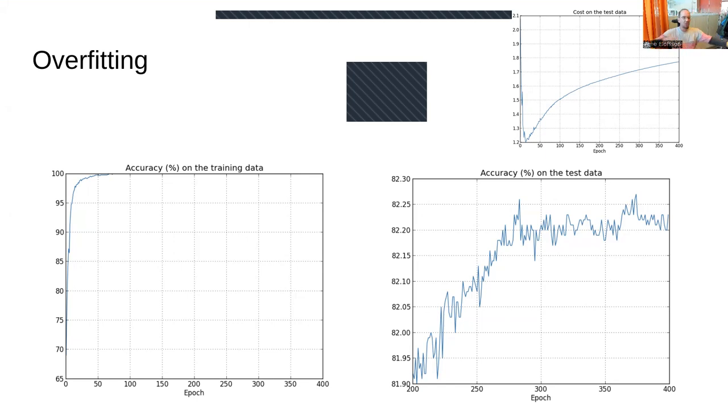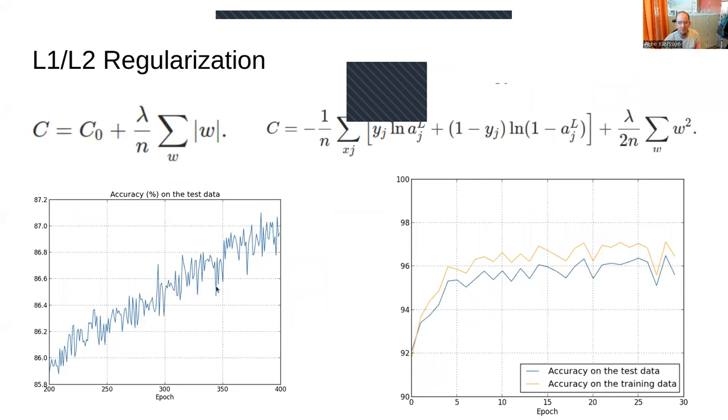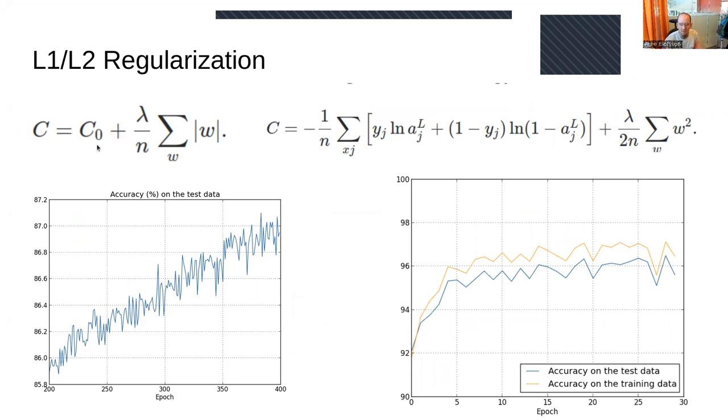One way to learn better is to use small weights, because big weights push you toward nothing. This is done using L1 or L2 normalization. The cost function is modified by adding something dependent on the sum of all weights. If they get big, you penalize that. If you need big weights for improvement, you'll use them, but otherwise you won't.